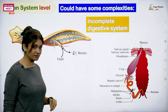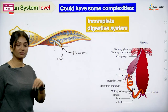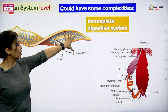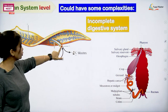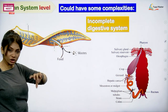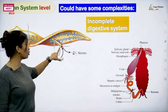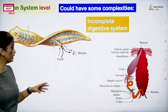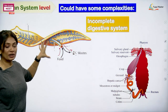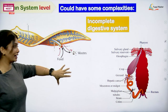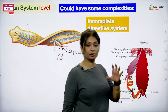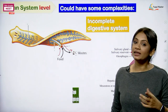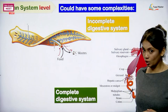An incomplete digestive system means the digestive tract has only one opening — common for both food intake and waste output. You can see this in flatworms (Platyhelminthes). A complete digestive system means the mouth and anus are separate, located at opposite ends of the body.